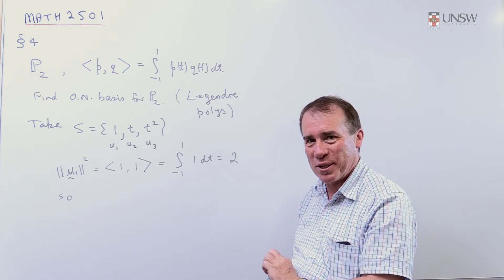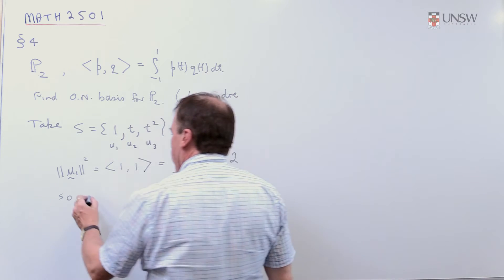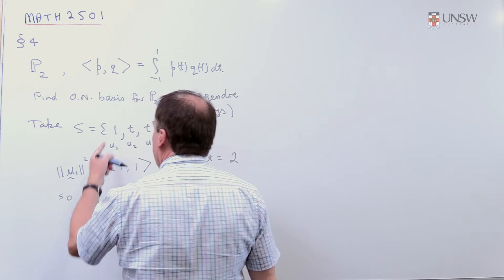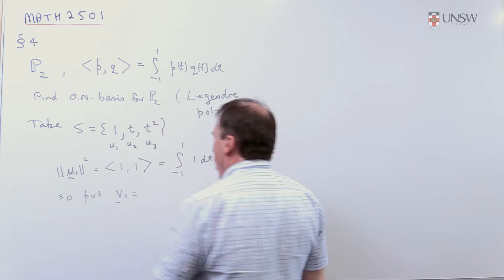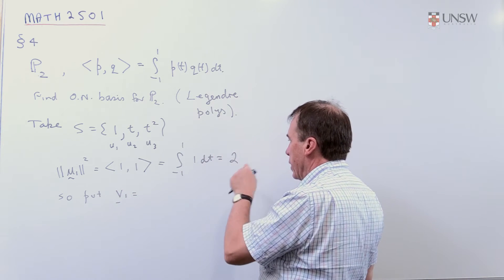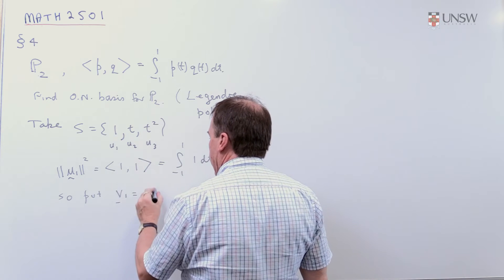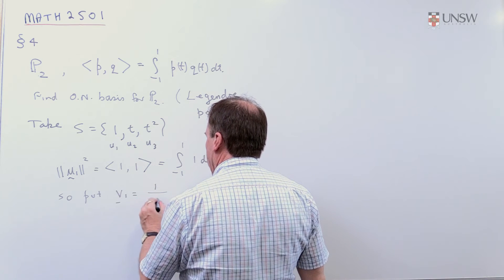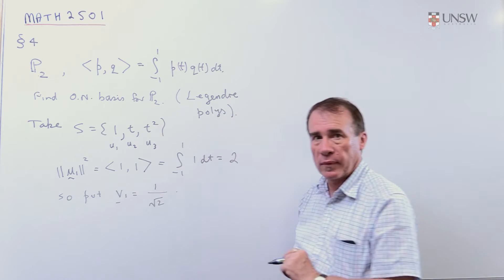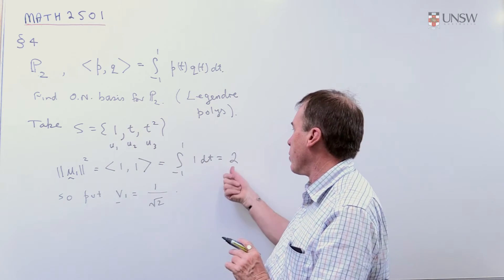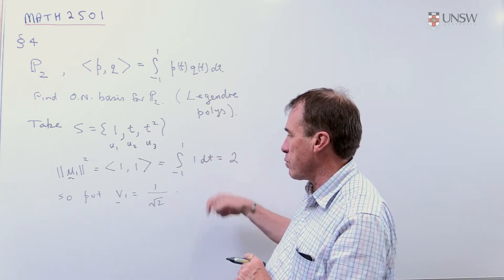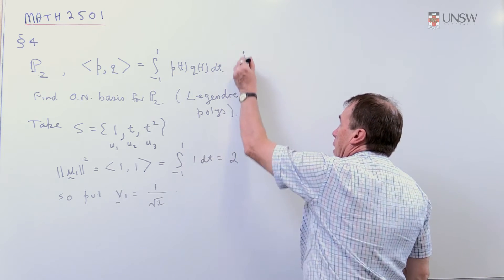So the length of this vector, oddly enough, is root 2. It's kind of counterintuitive. So I'm going to put the first of my unit vectors, which I'll call V1. I'm going to write that to be, divide this by its length. So that's 1 over root 2. So you take this vector, this function, this polynomial, and you divide by its length, which is root 2.